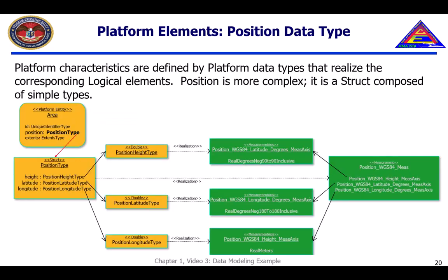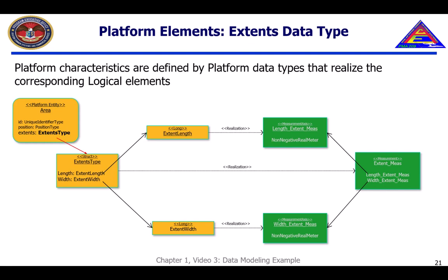The position measurement consists of three axes at the logical level and so requires a more complex representation at the platform level. The position logical measurement is realized by a struct at the platform level. Each of the platform properties is typed by a platform level data element that realizes a corresponding logical axis; in this case, each of the platform property types is a double. Because the extent's logical measurement consists of multiple axes, the corresponding platform representation is a struct containing two properties, each typed by a long. For semantic traceability, each of the platform elements realizes the corresponding logical element.